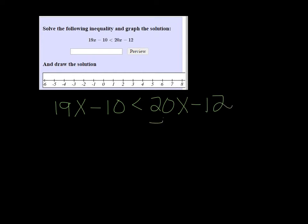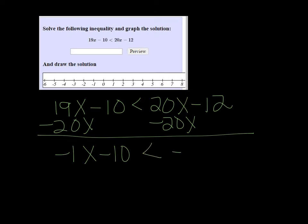I want all my x's on the same side, so I'm going to subtract 20x on both sides. So I get negative 1x minus 10 is less than negative 12.